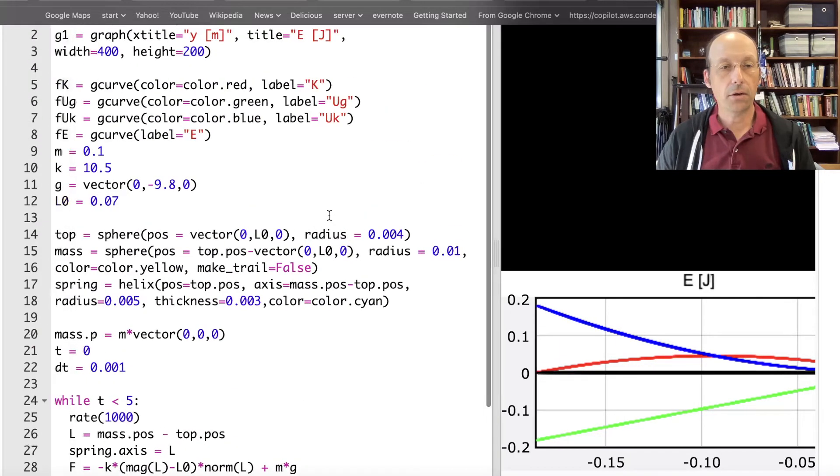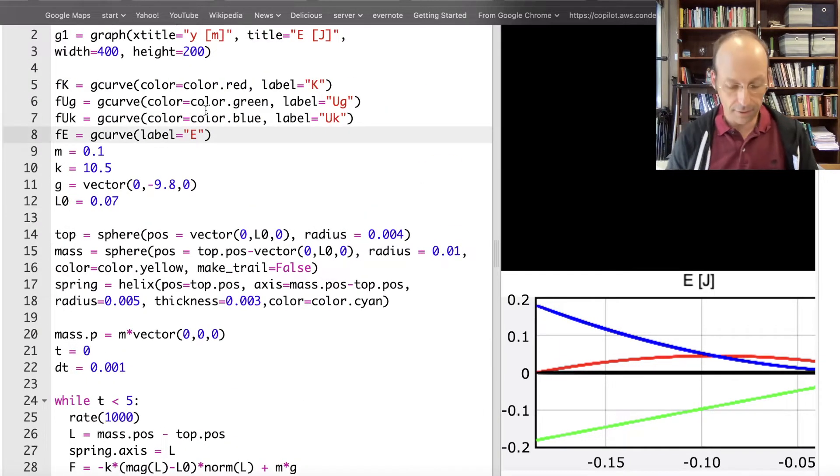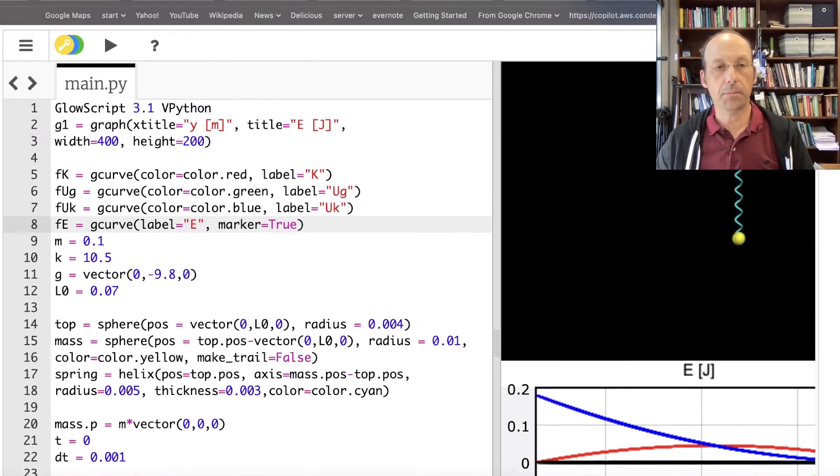We can actually kind of make this better. If I do up here when I make my graph, let's just do it this one. I think it's marker equals true. Let's just put it on just that one and see what happens.